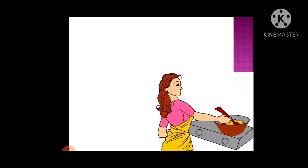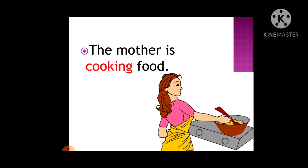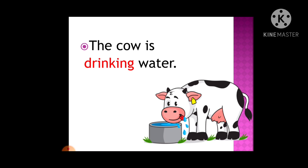Now what is the mother doing? The mother is cooking food. So the action word here is cooking — cook means to prepare food. Now what is the cow doing? The cow is drinking water. Drinking is the action word here.